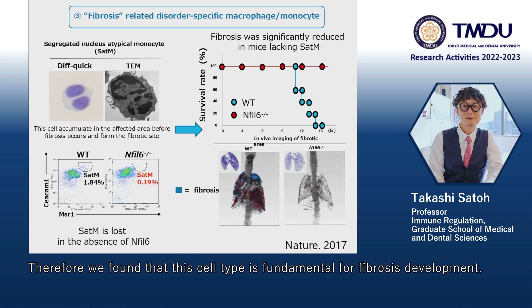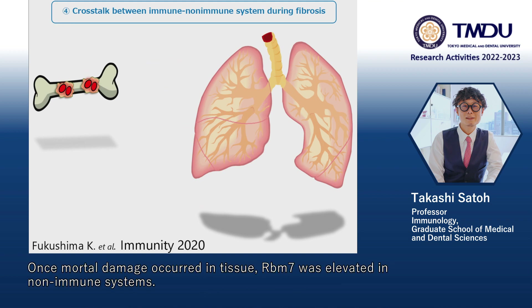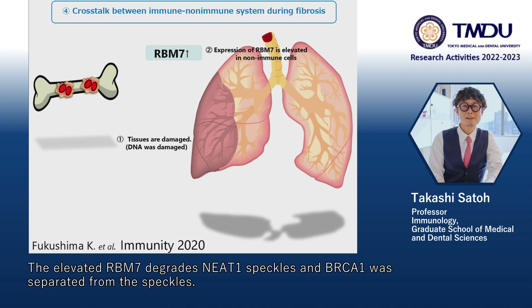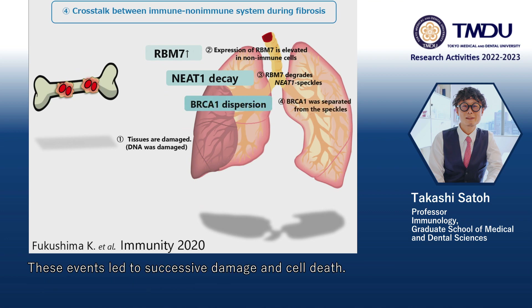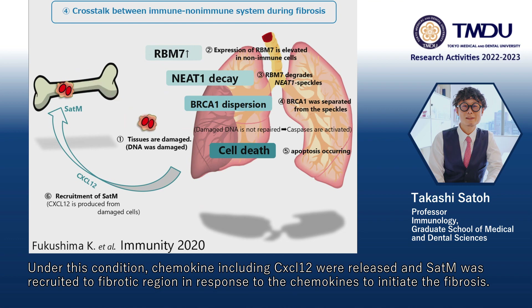Next, we studied the crosstalk between the immune system and the non-immune system during fibrosis development. Once motor damage occurred in tissue, RBM-7 was elevated in non-immune systems. The elevated RBM-7 degrades NEAT-1 speckles and BRCA-1 was separated from the speckles. These events led to successive damage and cell deaths. Under this condition, chemokines including CXCL12 were released and SAT-M was recruited to the fibrotic region in response to the chemokines to initiate the fibrosis.